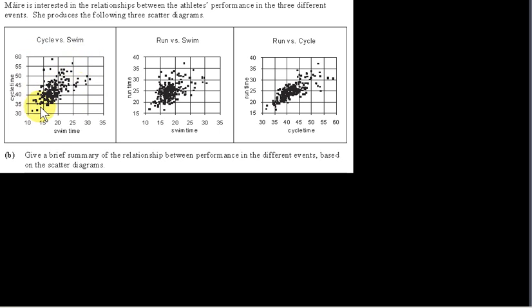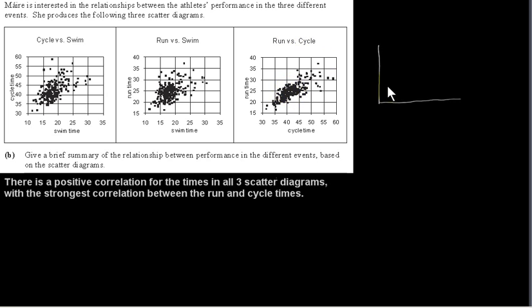For run versus swim, there is also a positive correlation — when swim time increases, run time generally increases. The correlation here is a bit less than for cycle versus swim; there's a stronger linear correlation for cycle versus swim. The strongest positive linear correlation appears to be between run and cycle.